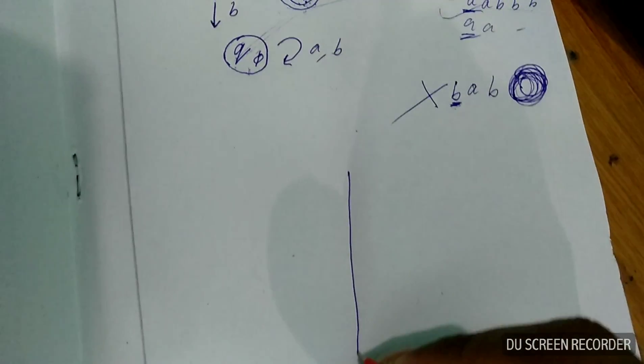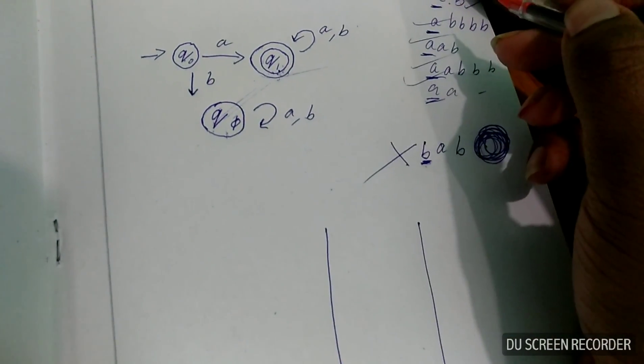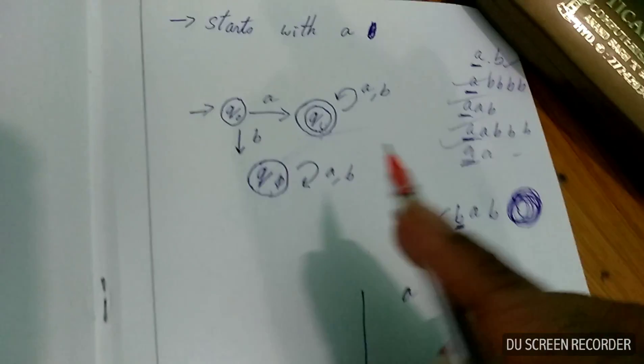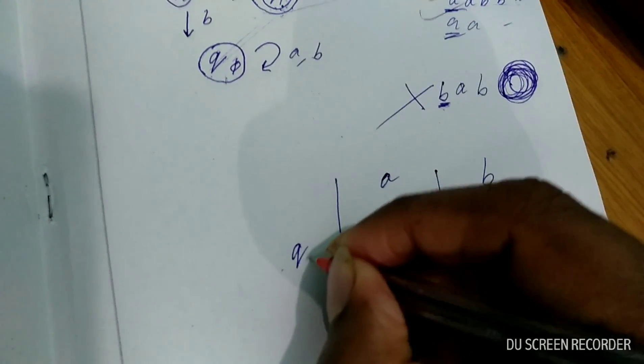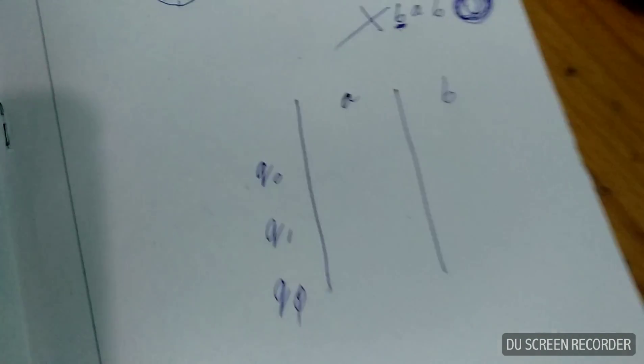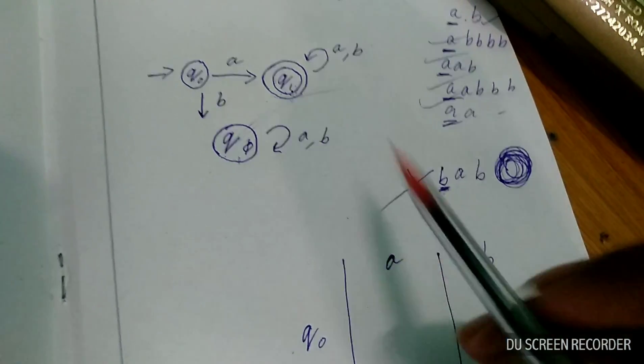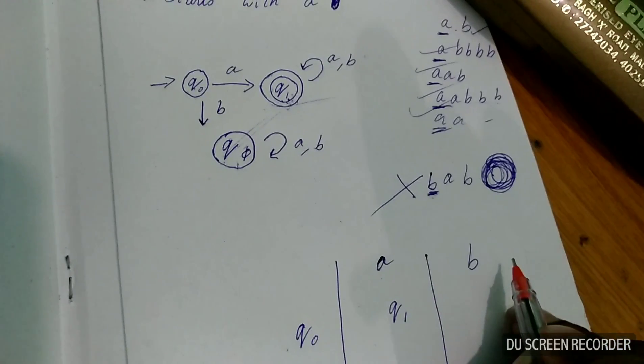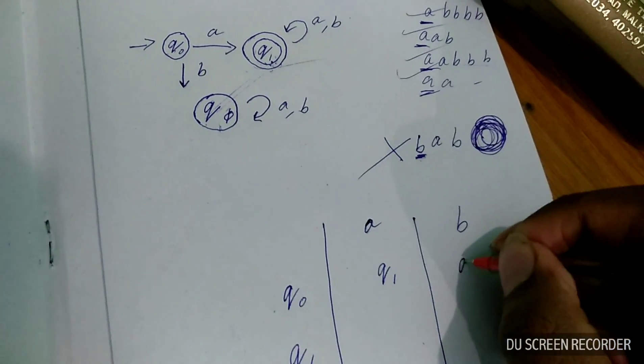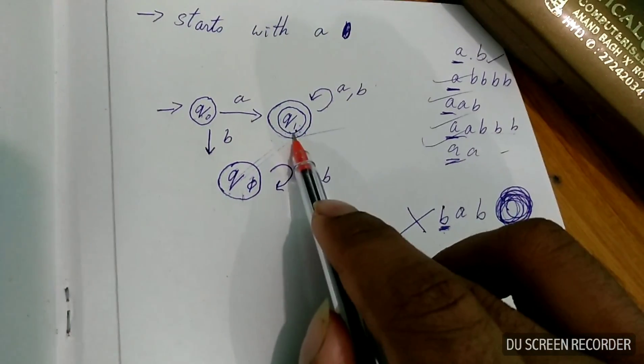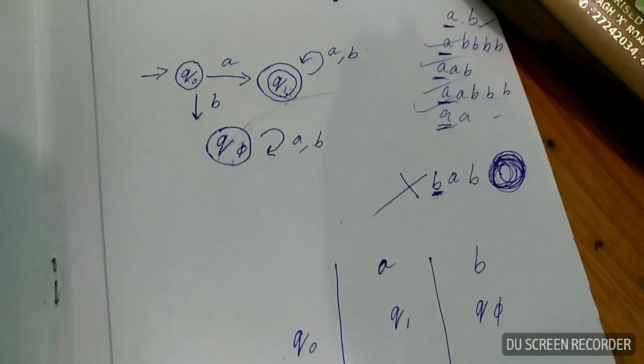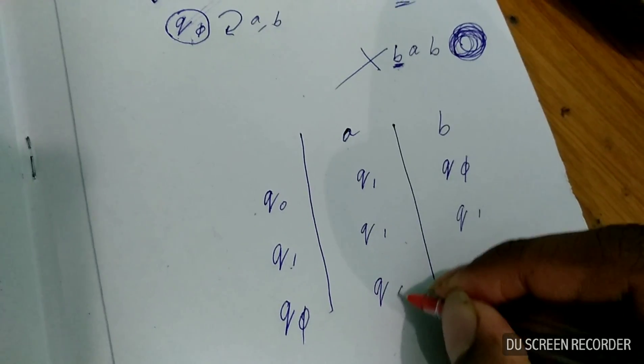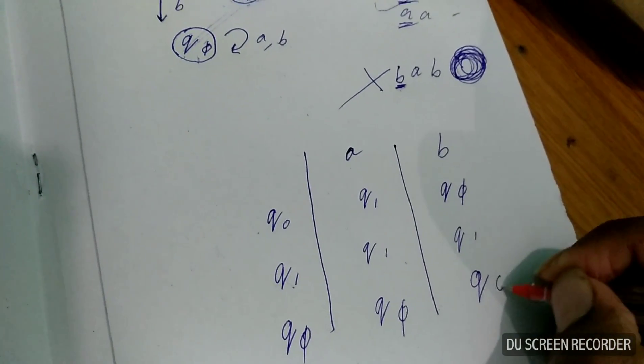And another, there's a transition table that we can make. So, what are the inputs that we are having right now? A, B. And number of states: Q0, Q1, Q5. At Q0, when we are occurring with A, we are getting Q1. Q0, B, we will go to Q5, which means it's a dead state. Q1, A: it remains in the same state because of the self-loop. Q1, B: same state. And Q5, A: same state. Q5, B: same state. This is the transition table.